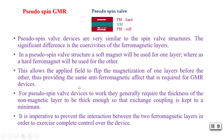For pseudo spin valve devices to work, they generally require the non-magnetic layer to be thick enough so that the exchange coupling — the RKKY coupling — is kept to a minimum. It is also imperative to prevent interaction between the two ferromagnetic layers in order to exercise complete control over the device.